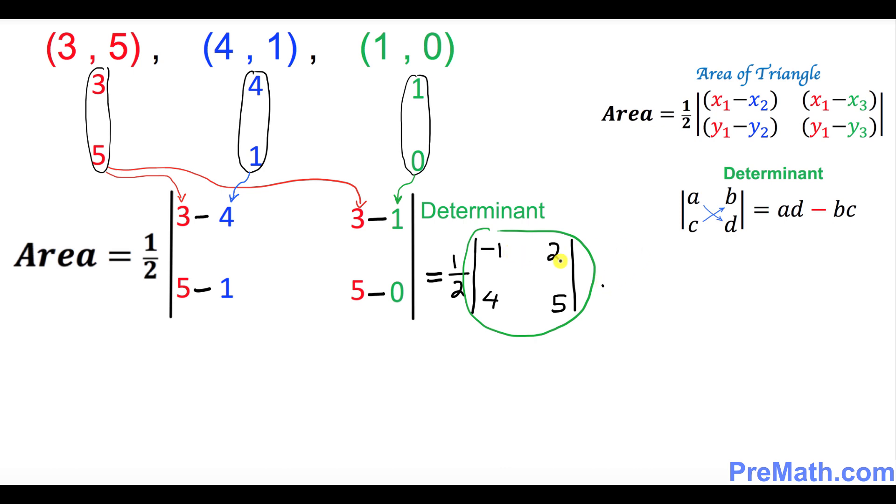So let's go ahead and take care of that. I want you to multiply this way. Negative 1 times 5 is negative 5, and then you always put a minus sign and then you multiply the other way around. That's going to be 4 times 2 is 8. Negative 5 and negative 8 makes negative 13. So the value of this determinant turns out to be negative 13.